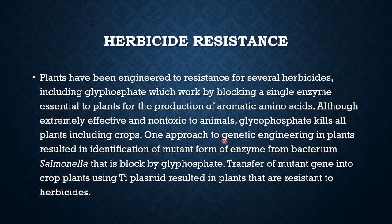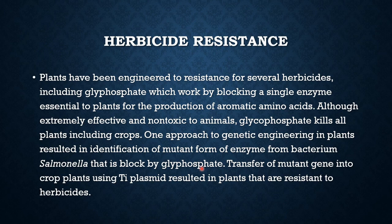To save crop plants, genetic engineering has been used. It resulted in the identification of a mutant form of the enzyme from bacteria. This mutant form has one or two point changes — the enzyme is similar but it blocks glyphosate so that glyphosate cannot block the enzyme. The mutant gene responsible for this enzyme production was then transferred into crop plants using the Ti plasmid.